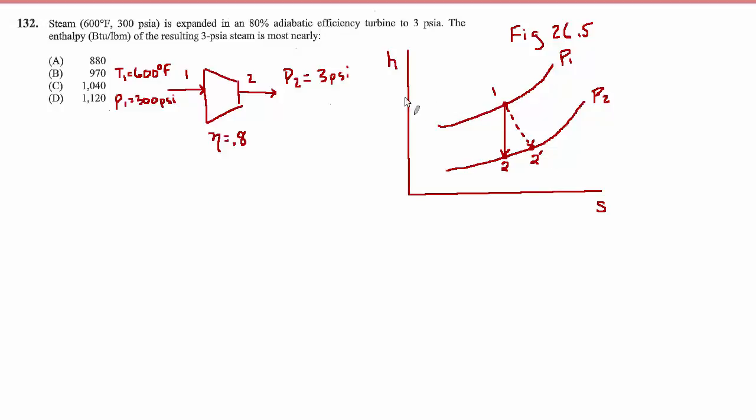Since the y-axis is the enthalpy, the difference between state 1 and state 2 is delta h for the ideal case. Delta h ideal is h1 minus h2, which is going to be greater than h1 minus h2 prime. So we'll call that delta h actual, h1 minus h2 prime. The efficiency of a turbine is given by the ratio of delta h actual to delta h ideal, which is h1 minus h2 prime over h1 minus h2.